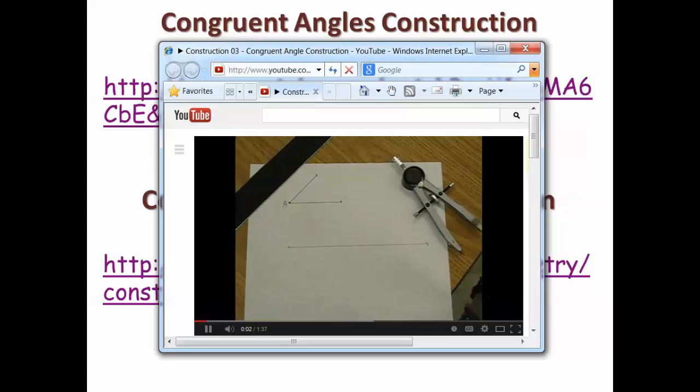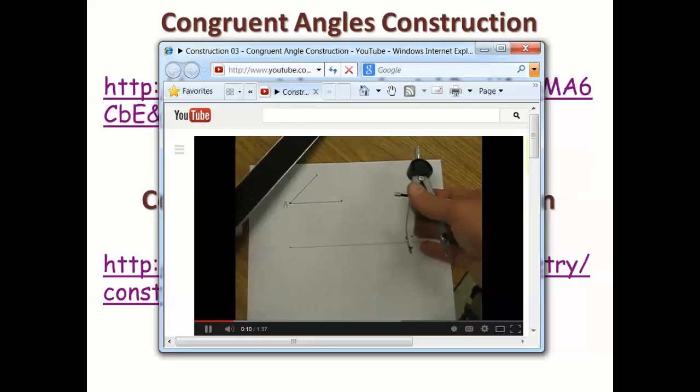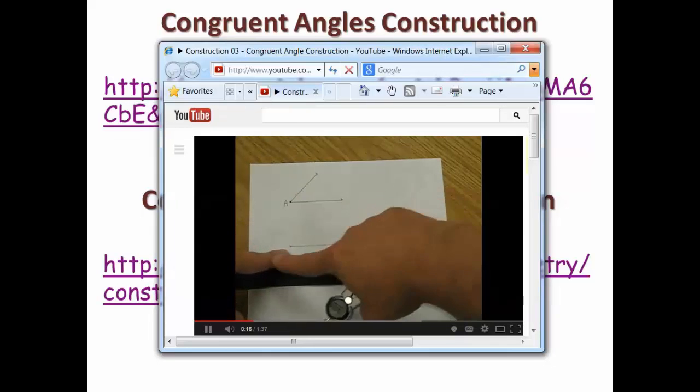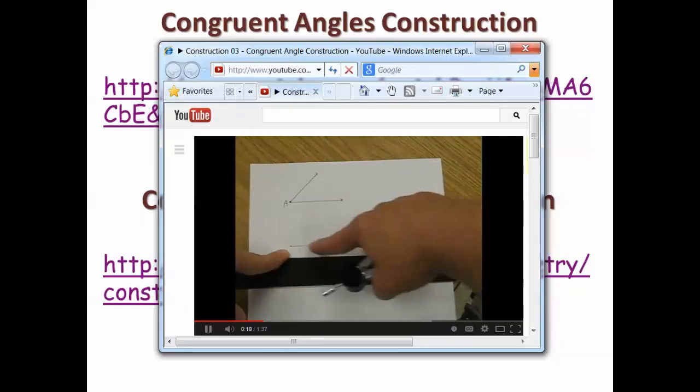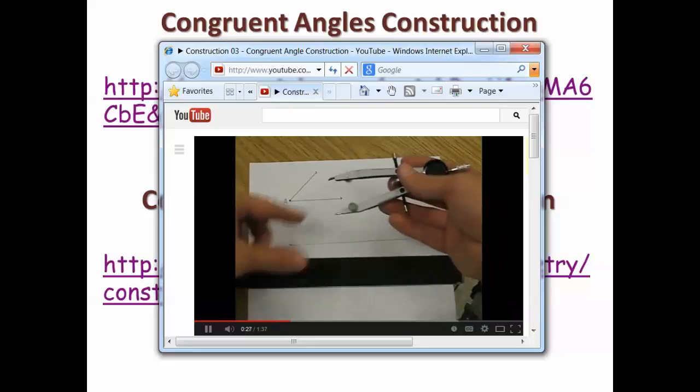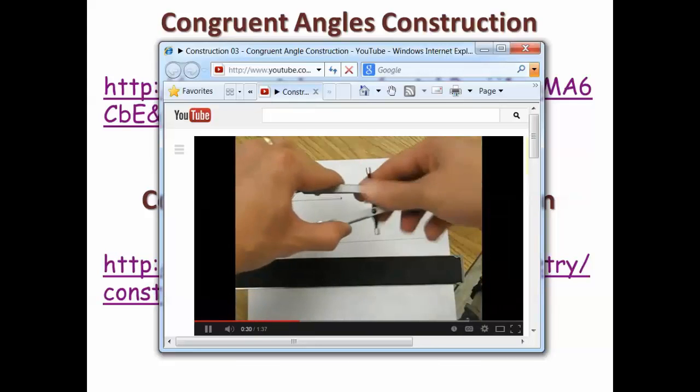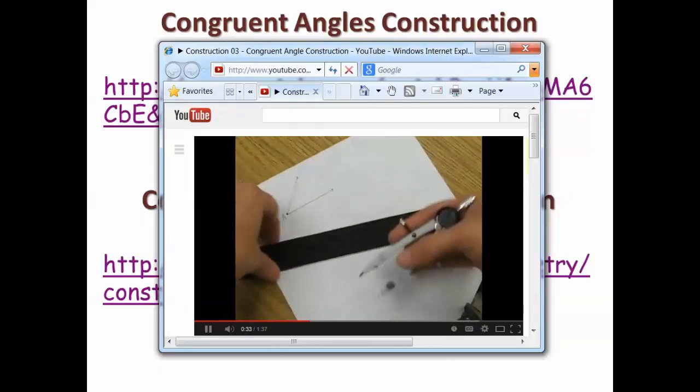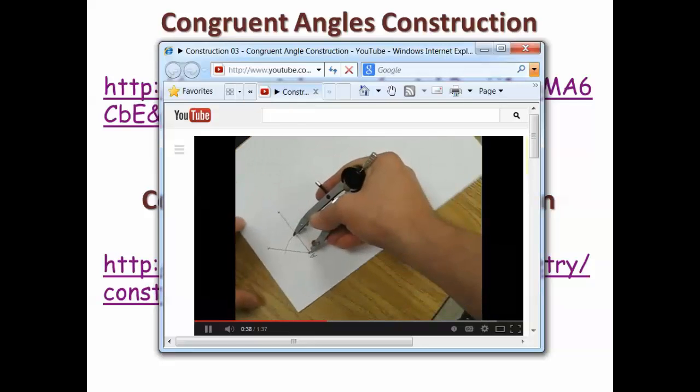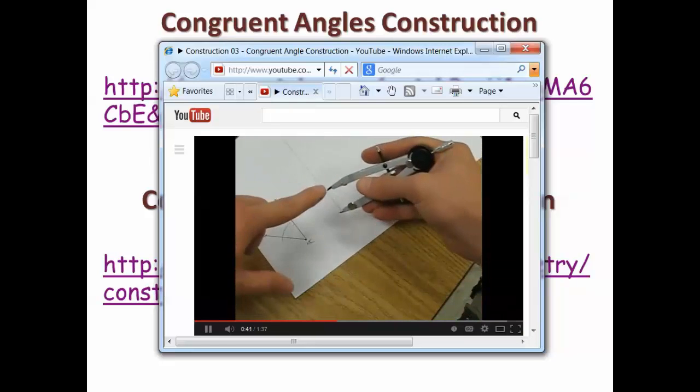In this construction we're going to learn how to construct a congruent angle. Here's the angle that I want to copy. We'll need our compass and straightedge. The first step is to construct a ray with an endpoint. It doesn't matter how long it is, we just need to start with a ray. This is where we're going to copy our angle to. The second step is to take your compass with any radius and make an arc that passes through both sides of our angle. Now we need to keep the same radius and make the same arc down on our new ray.